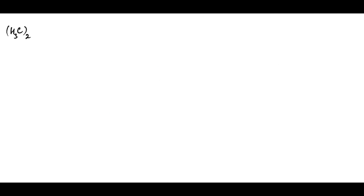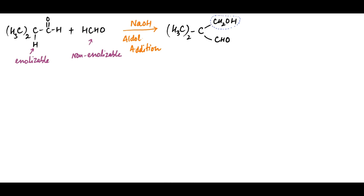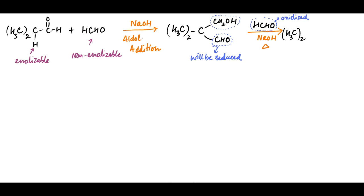One of the most important applications is the cross-Cannizzaro reaction between an enolizable aldehyde and formaldehyde, which is non-enolizable. The first step will be a cross-aldol addition, so that the alpha-hydrogen is replaced by a hydroxymethyl group. The product, a beta-hydroxyaldehyde, then undergoes cross-Cannizzaro reaction with formaldehyde, so that the former is reduced and formaldehyde is oxidized. Thus the aldehyde is reduced to a hydroxymethyl group, and formaldehyde is oxidized to sodium formate.